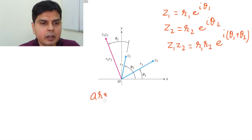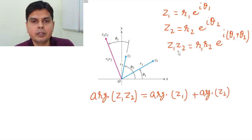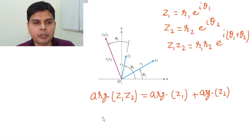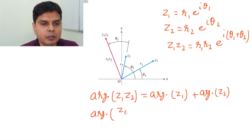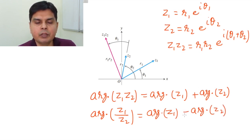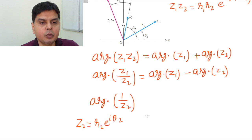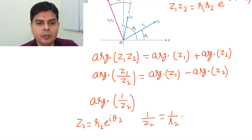We can write that arg(z1·z2) = arg(z1) + arg(z2), so the argument of the product is θ1 + θ2. The same applies to the quotient: arg(z1/z2) = arg(z1) − arg(z2). To understand why the minus sign appears, consider: if z2 = r2·e^(iθ2), then 1/z2 = (1/r2)·e^(−iθ2), so arg(1/z2) = −arg(z2).